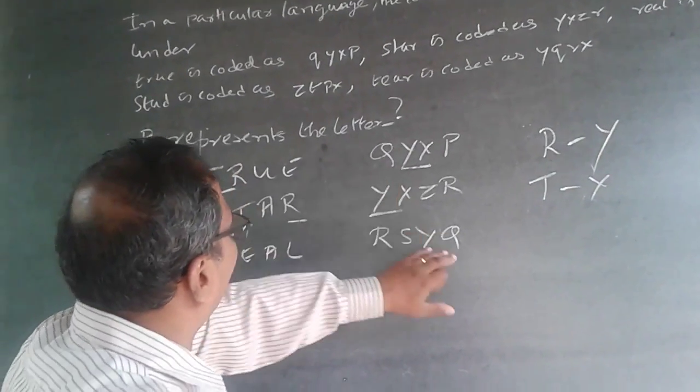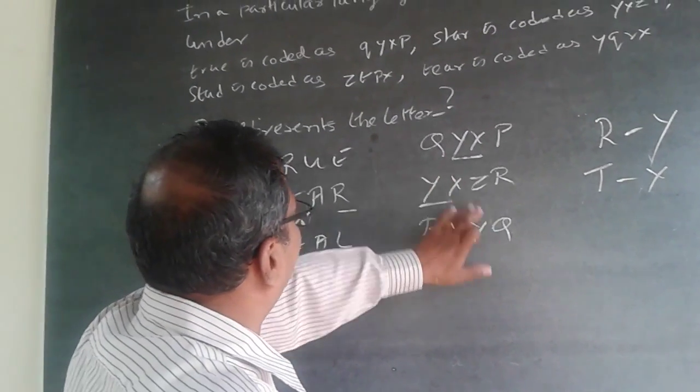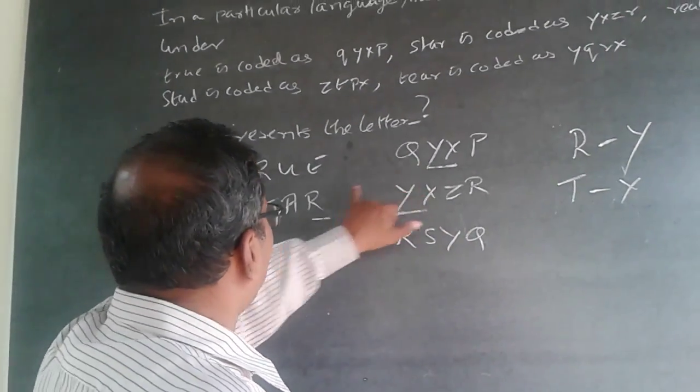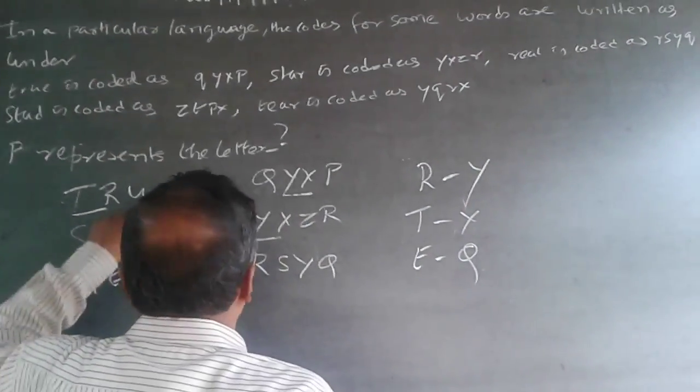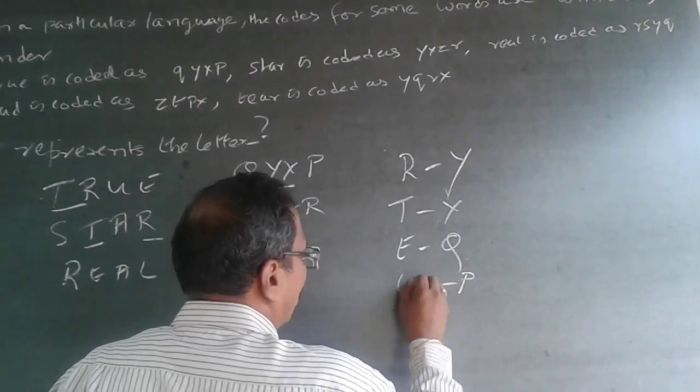Here Q and Q are common letters between TRUE and REAL, so E will be Q. Only one is left, so P is for U. So the answer is U.